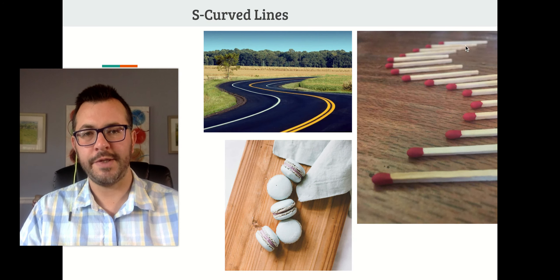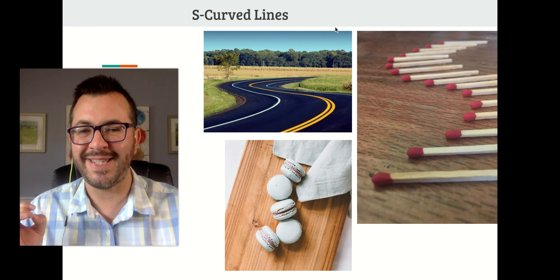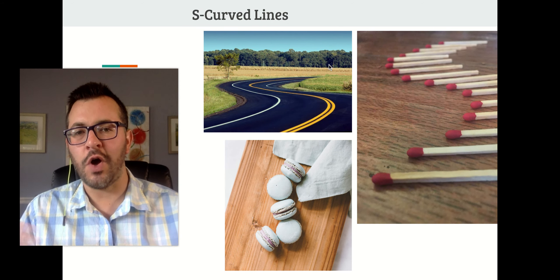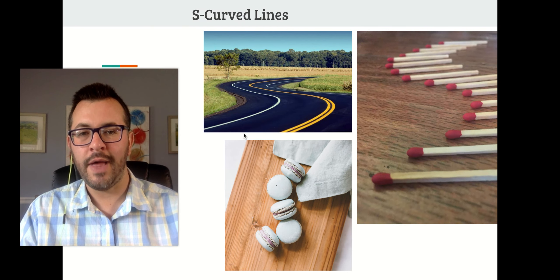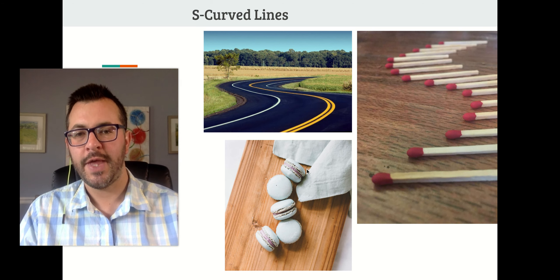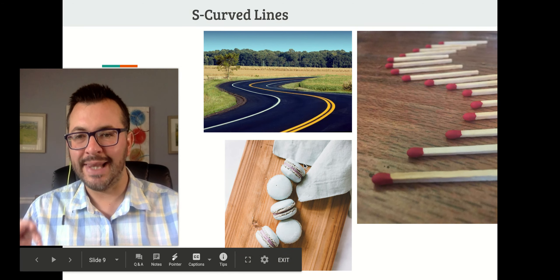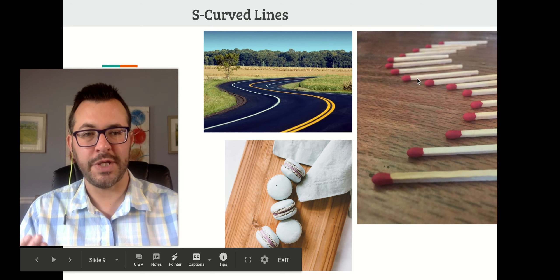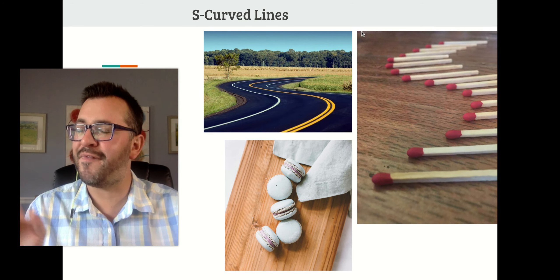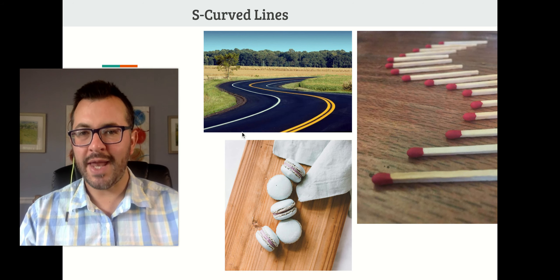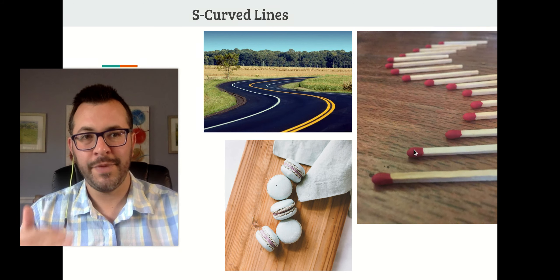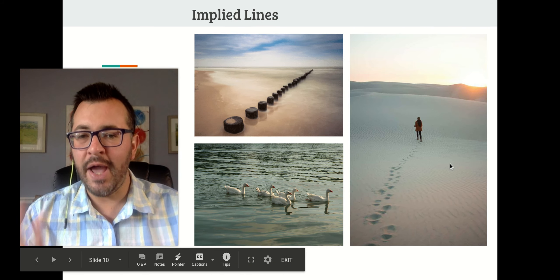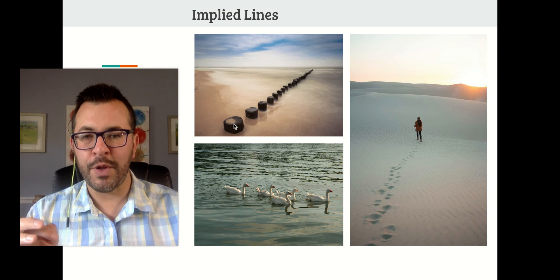An S-curve is a specific type of curve that looks like the shape of an S. It's often used with roads, paths, streams, or rivers. You can see the road lines making an S shape, or macarons laid out in an S shape, or matches arranged in an S shape. If you can't find something in nature like a winding road, you can make it with objects at home — an easy way to create an S-curve image.